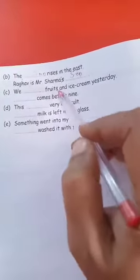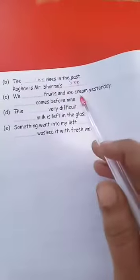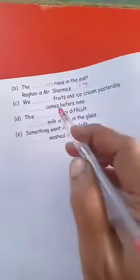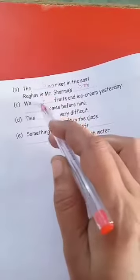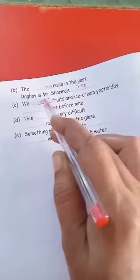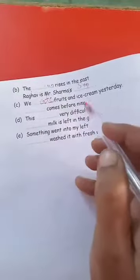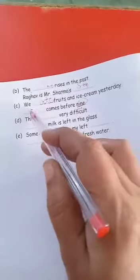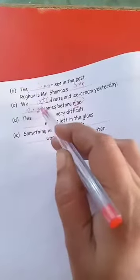'We dash fruits and ice cream yesterday.' Answer is 'ate' — A-T-E. And 'Dash comes before nine' — nine number ke pehle wala number kya hota hai? Eight — E-I-G-H-T. Dono homophones dekho: 'ate' aur 'eight'.